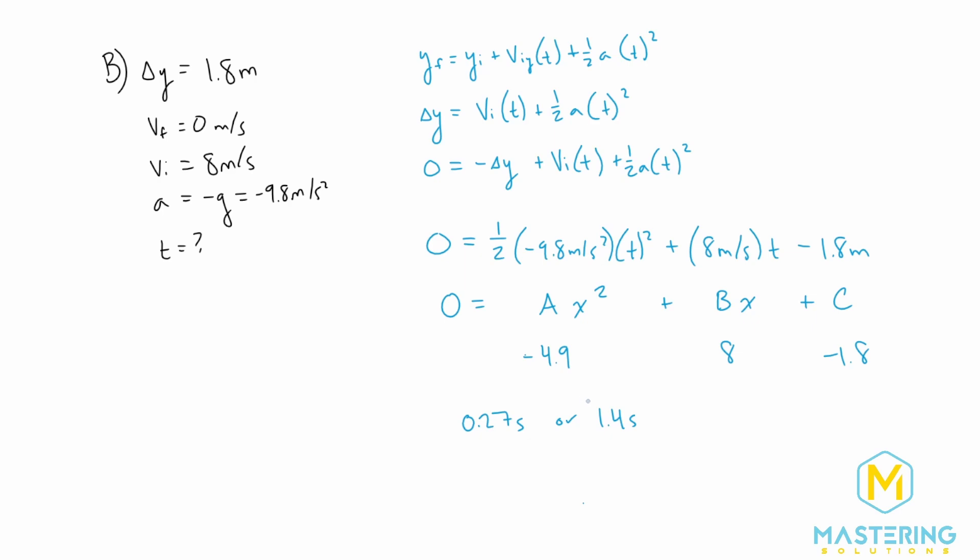In this case we have to use a little bit of logic, because essentially a quarter of a second for a fish to jump 1.8 meters doesn't really make a whole lot of sense. So our answer for how long it is in the air has to be 1.4 seconds for part B.